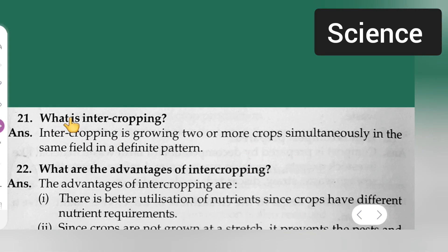First is what is intercropping. Answer is intercropping is growing two or more crops simultaneously in the same field in a definite pattern.